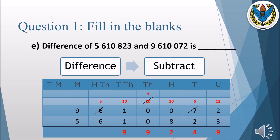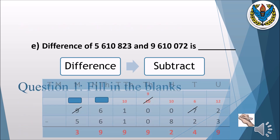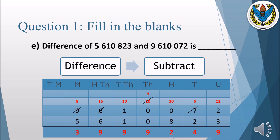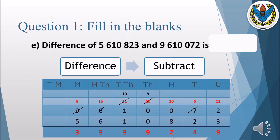At the ten thousands column, subtract 1 from 0 — not possible, so borrow 1 from the next column to make it 10, then subtract 1 from 10 to get 9. At hundred thousands, subtract 6 from 5 — not possible, so borrow 1 from the next column to make it 15, then subtract 6 from 15 to get 9. Lastly, 8 minus 5 is 3. So the final answer is 3,999,249.